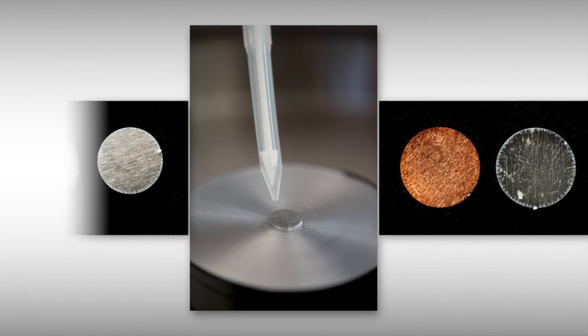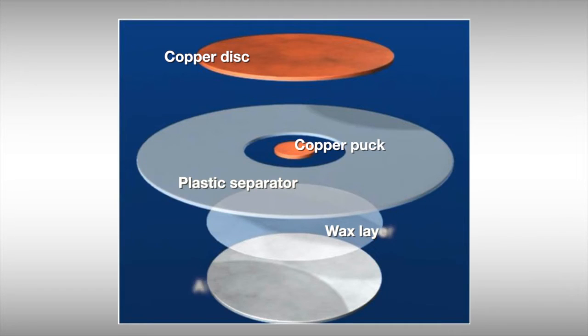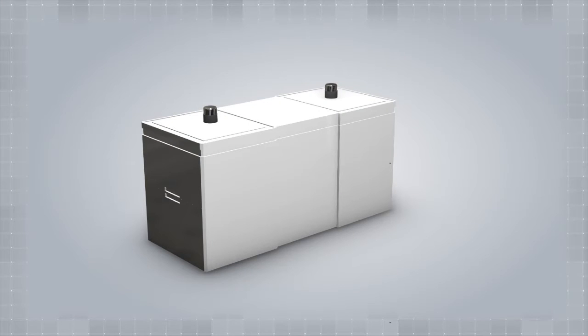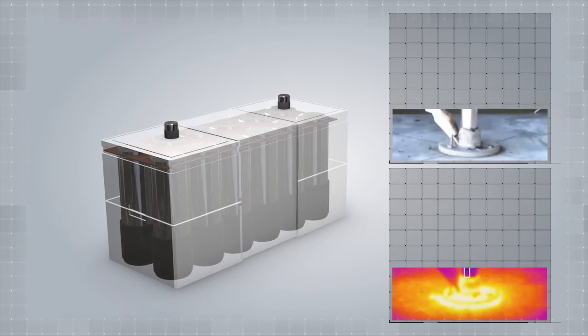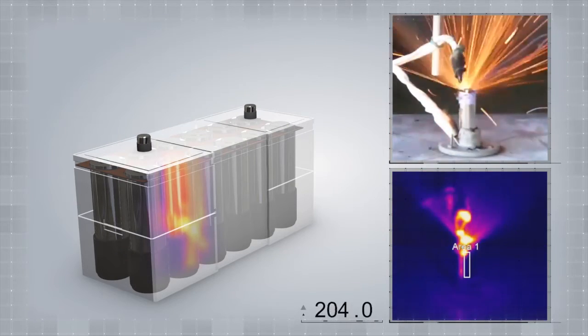The battery internal short circuit device, in essence, is a number of different metal components that are separated by a wax layer. We bring the temperature of the battery up to the melting point of the wax. Once the wax melts, it is then wicked away by the cathode and anode and the separator, and then the metal components of the ISC connect to create an internal short within the battery.